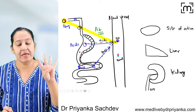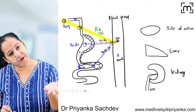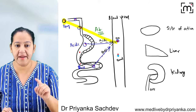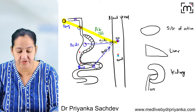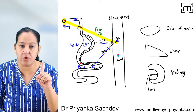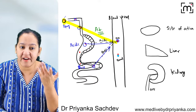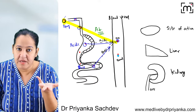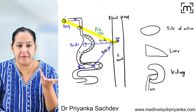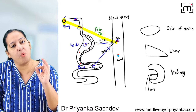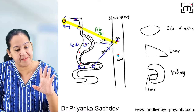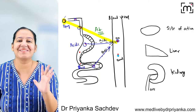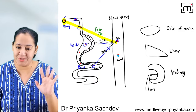So absorption is the movement of the drug from the site of administration to the circulation. It is not necessary to always give the drug via oral route — we can give it IV, IM, or via various routes. Whatever the route of administration, all drugs ultimately reach the circulation.